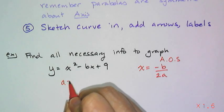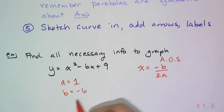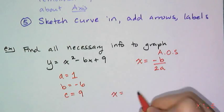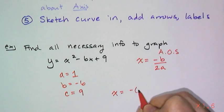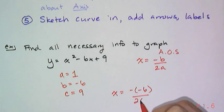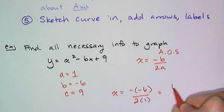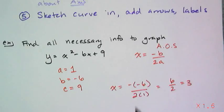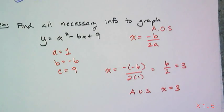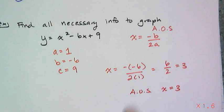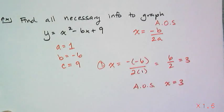And in this example, a equals 1, b equals negative 6, and c equals 9. And so substituting in these values, I get the opposite of negative 6 over 2 times 1, which is 6 over 2 or 3. So my axis of symmetry is located at x equals 3. So it's that vertical line, x equals 3. So step 1 taken care of.